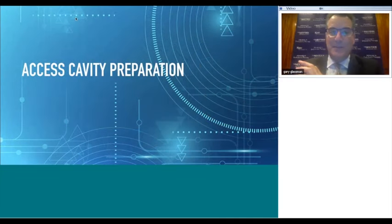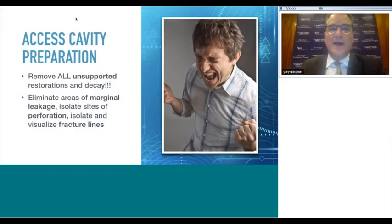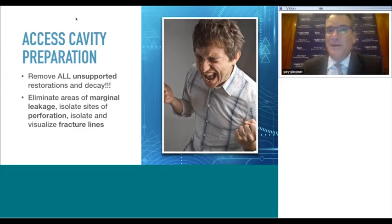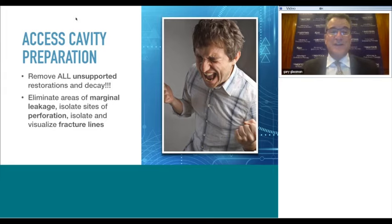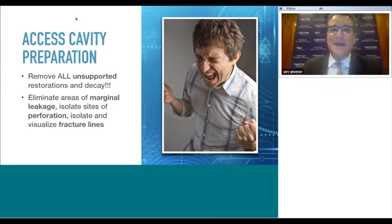Creating the perfect access is probably one of the most frustrating things we encounter. I've done over 50,000 cases as an endodontist and still get that fear going into the pulp chamber. First, remove all unsupported restorations and decay. Eliminate areas of marginal leakage, isolate sites of perforation, and visualize fracture or craze lines within the pulp chamber space. Relax, isolate, take a breath, and get ready.